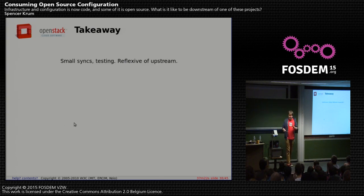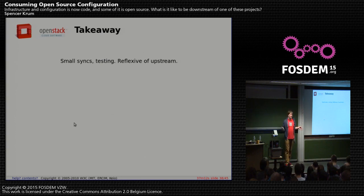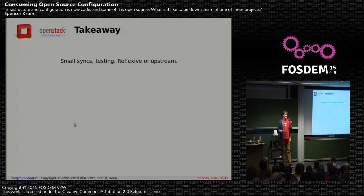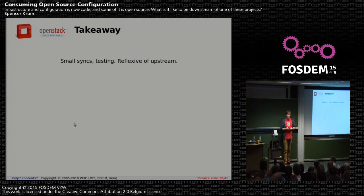Use small syncs. If you drop a 3,000-line patch bomb on upstream, you'll be sent away. Similarly, if you wait three months before syncing from upstream, you'll have the equivalent of a 3,000-line dump in your own infrastructure. The only way forward is to sync often with small syncs. That means you need some kind of testing framework — one of our errors was not setting up a minimal acceptance test framework at the beginning, and that has put us very far behind.